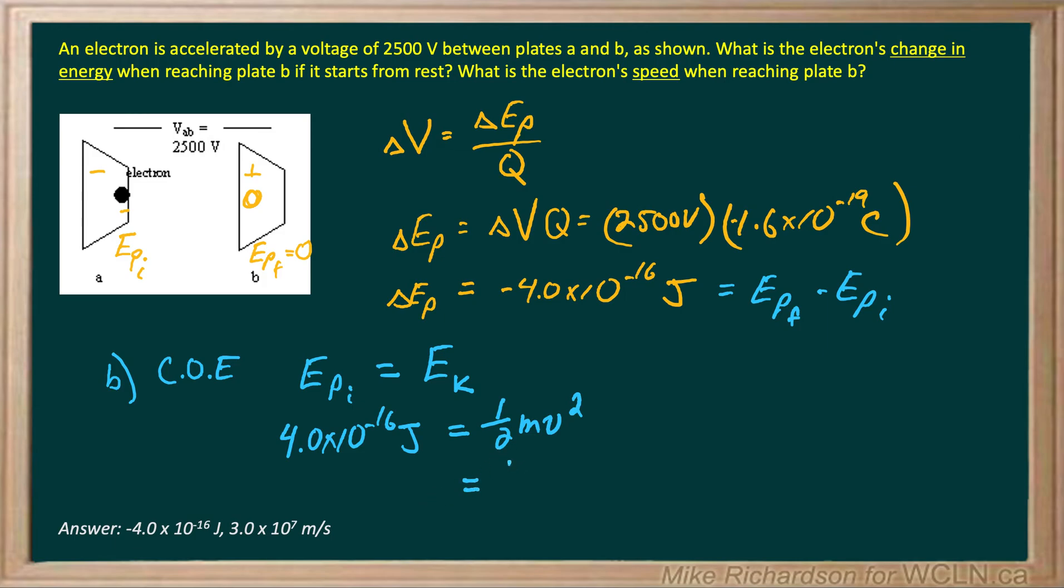Putting in my mass for the electron, 9.11 times 10 to the negative 31 kilograms, and solving this expression for velocity gives us a speed of 3 times 10 to the 7 meters per second.